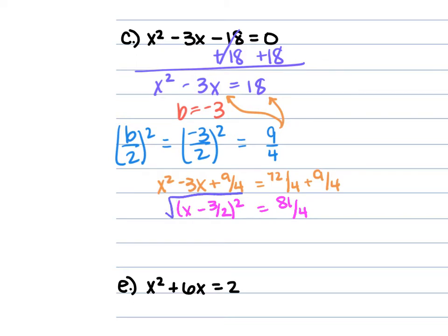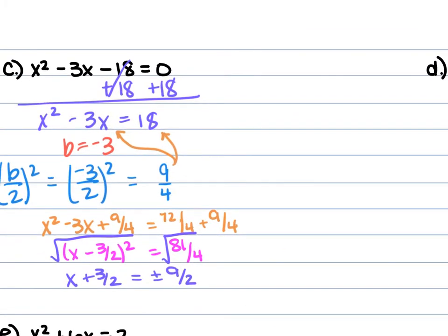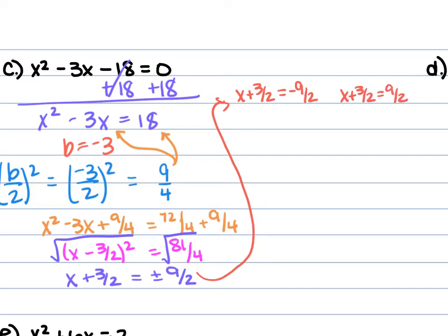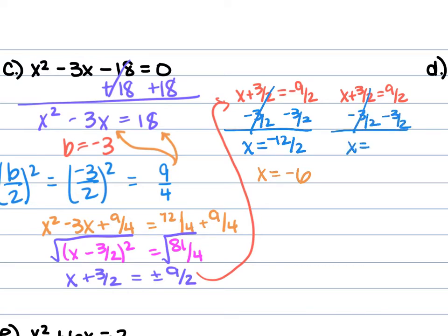Take the square root of both sides: x minus 3 over 2 equals plus or minus 9 over 2. Form two equations: x plus 3 over 2 equals negative 9 over 2, and x plus 3 over 2 equals positive 9 over 2. Subtract 3 over 2 from each side. So x equals negative 9 over 2 minus 3 over 2, which is negative 6, and x equals 6 over 2, which is 3. So x equals negative 6 and x equals 3.